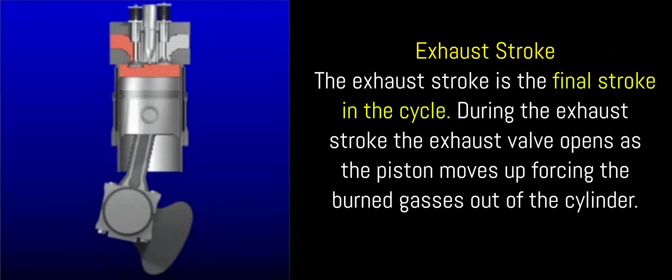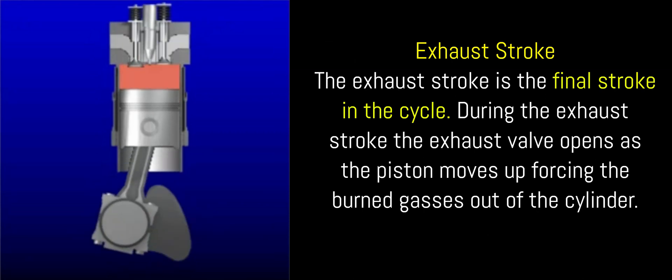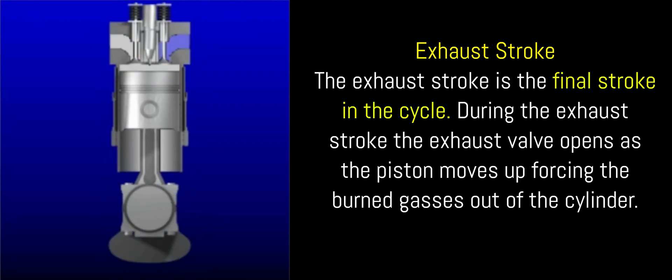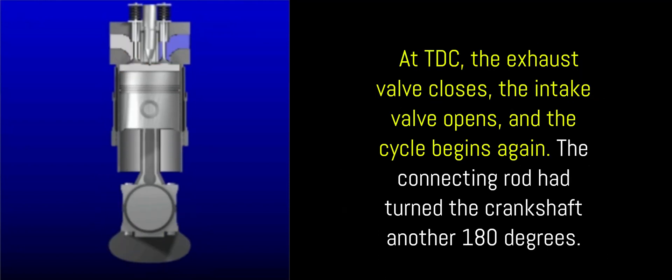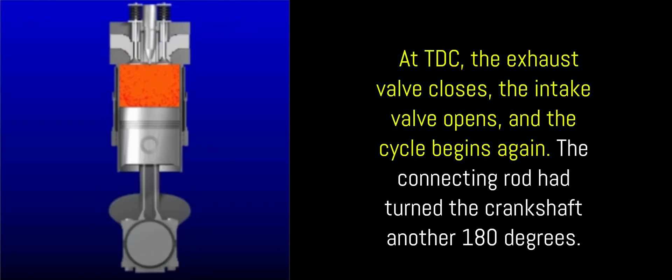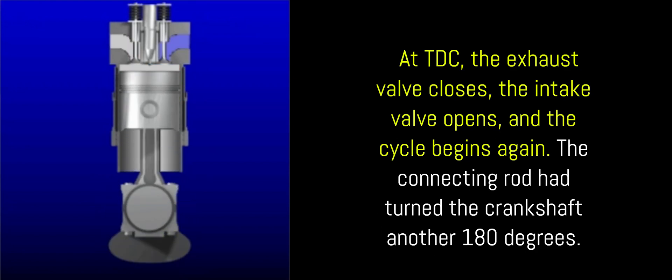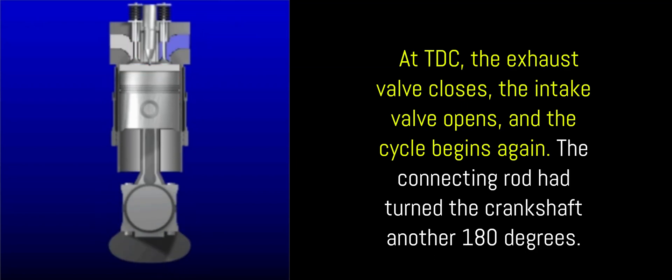Exhaust stroke: The exhaust stroke is the final stroke in the cycle. During the exhaust stroke, the exhaust valve opens as the piston moves up, forcing the burned gases out of the cylinder. At TDC, the exhaust valve closes, the intake valve opens, and the cycle begins again. The connecting rod had turned the crankshaft another 180 degrees.